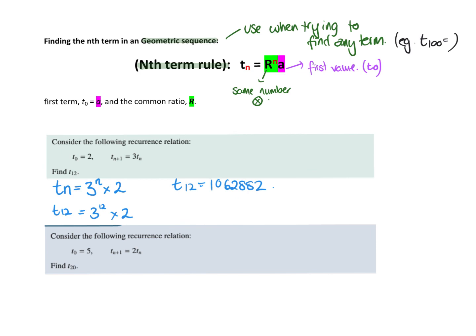Here, let's go for this one. It says find T20. So first of all, I want to get the nth term formula, which would be the R to the power of n times the original, which was 5. So when they asked me to find T20, it will be 2 to the power of 20 times 5. If I do that one, 2 to the power of 20 times 5, it's going to be a big number too: 5,242,880.